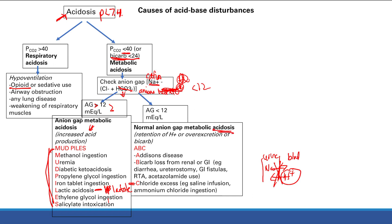Bicarb loss — you can have bicarb loss from the kidneys or from the GI tract. There's a lot of bicarb in the GI tract. If you lose bicarb, you don't have enough buffer, you shift the equation to the right, and you get H+. You can lose bicarb from the GI tract through diarrhea or ureterosigmoidostomy — a connection between the GI tract and the urinary system — or other fistulas. In your kidneys, renal tubular acidosis or acetazolamide use can also cause bicarb loss.